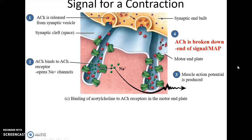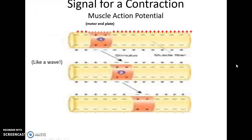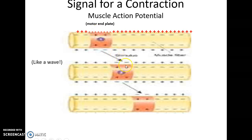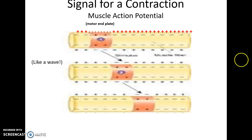The muscle action potential can move along the sarcolemma. Eventually the signal will end — no more acetylcholine is released into the synaptic cleft, and an enzyme breaks down the acetylcholine, ending the generation of the action potential. While it's being generated, the change in charge at the motor end plate triggers the next region of the sarcolemma to change its charge, which then triggers the next region, passing along like a wave motion in a stadium.